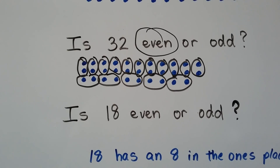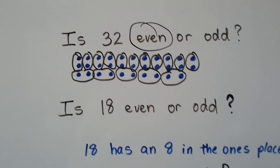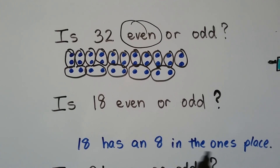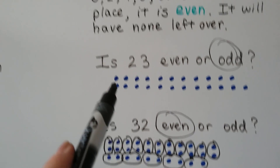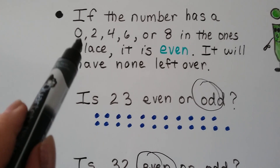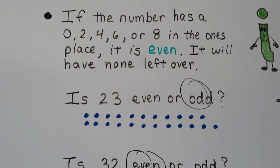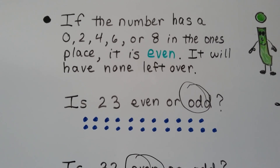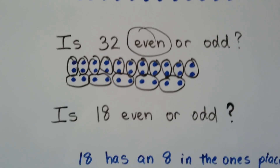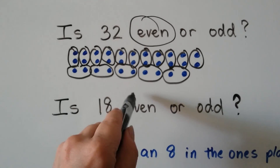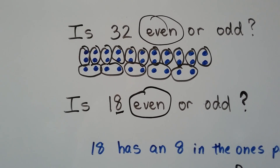Is 18 even or odd? 18 has 8 in the ones place. If the number has a 0, 2, 4, 6, or 8 in the ones place, it's even — it will have none left over. So 18 is even. It's got an 8 in the ones place.